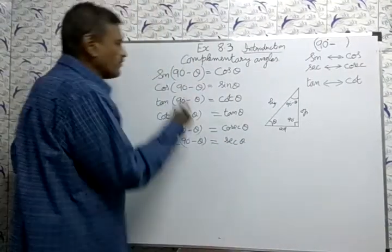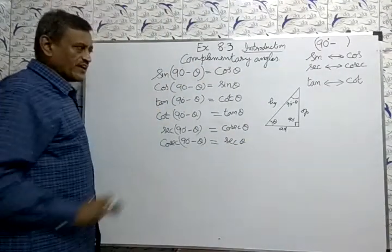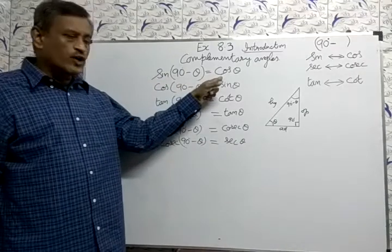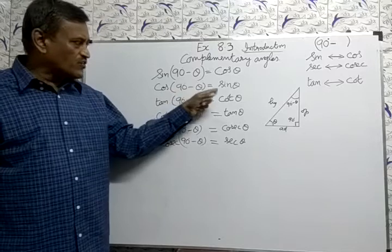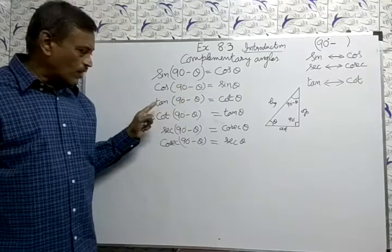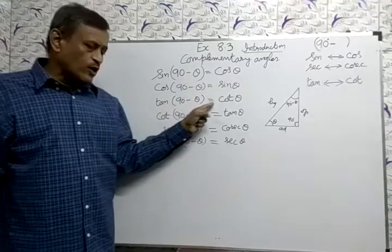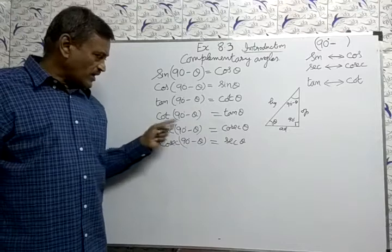Now that is why Sin(90-θ) equal to Cosθ, Cos(90-θ) equal to Sinθ. Like a formula: Tan(90-θ) equal to Cotθ, Cot(90-θ) equal to Tanθ.